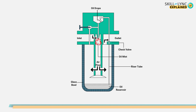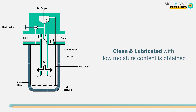The oil finally comes out as a spray and mixes with the air. The oil flow rate can be adjusted by a needle valve. Moreover, the larger oil particles in the air-oil mixture are removed as the air swirls around the central cylinder. Finally, clean and lubricated air with low moisture content is obtained at the outlet to be used in the system.